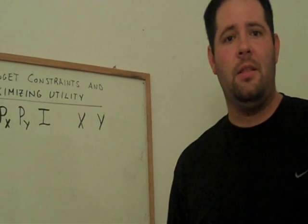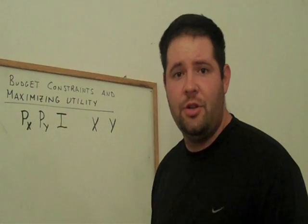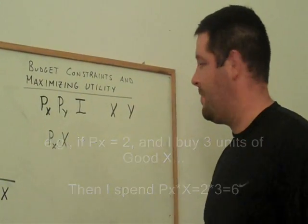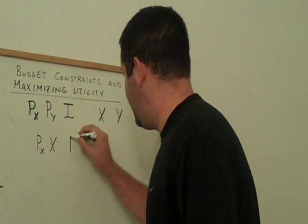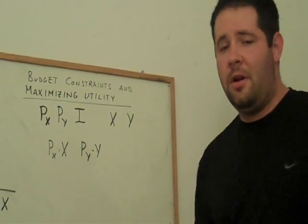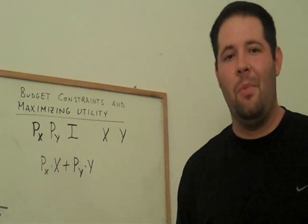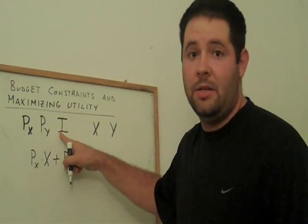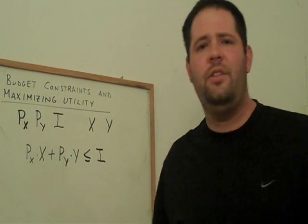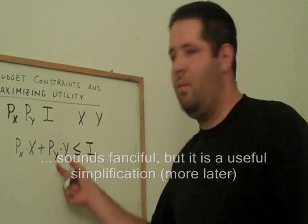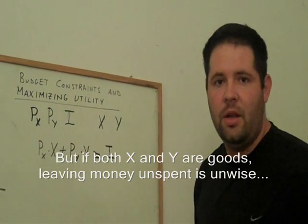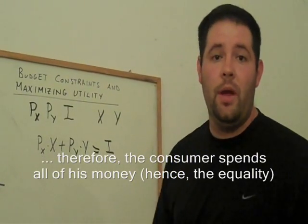One way to think about this is to think about my expenditures on X. That's just the price of X times however much of good X that I buy. I want to think about my expenditures on Y, and do the exact same thing. Price of Y times however much I spend on Y. I can add those two together, and one thing I know is that I can't spend more than I actually have to spend, and that's what my income is. We'll just pretend like these are the only two goods in the whole wide world. So what does this budget constraint mean? If we spend all of our money, this becomes an equality. We'll make the assumption that we're going to spend all the way up to our income.